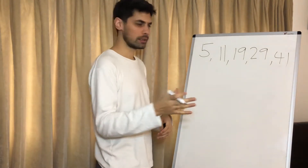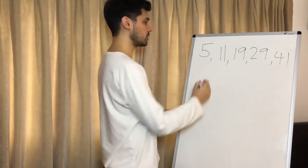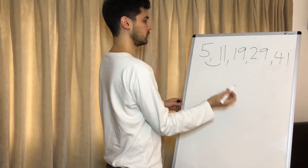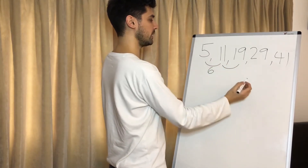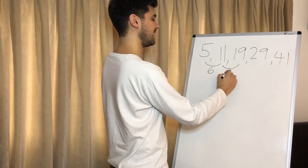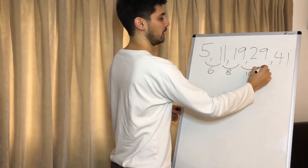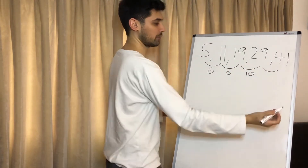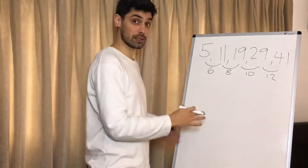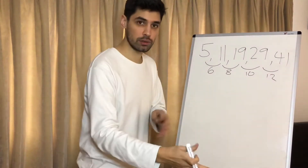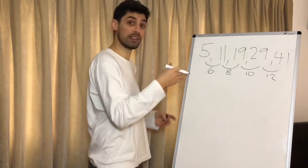So first of all, let's see what the difference between all these values is. 5 to 11, we go up by 6. 11 to 19, we go up by 8. 19 to 29, that's 10, and 29 to 41 is 12. All these differences are different, so that's how we know it's not linear. A linear sequence is where they all go up by the same amount.